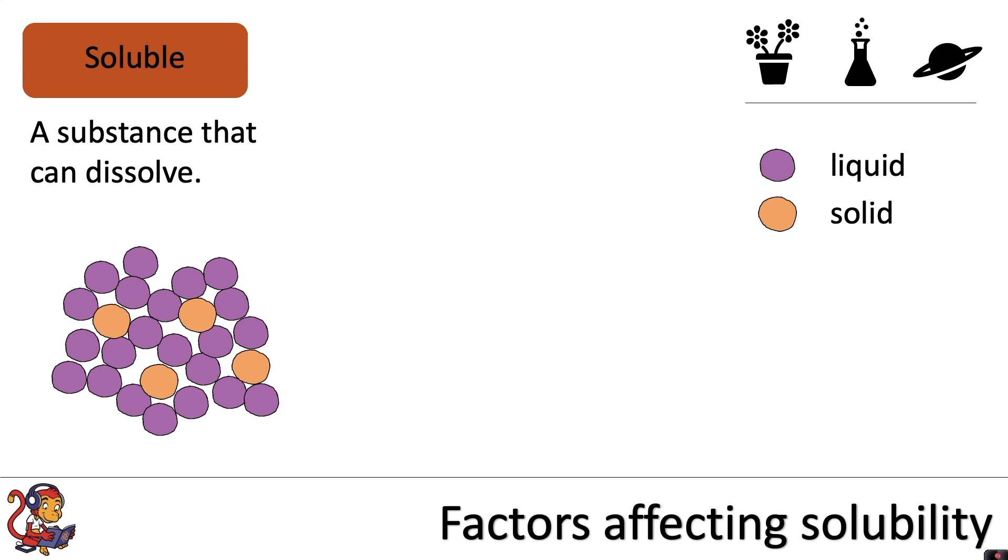The first word is soluble. A soluble substance is a substance that can dissolve. Examples of soluble substances include things such as sugar and salt.